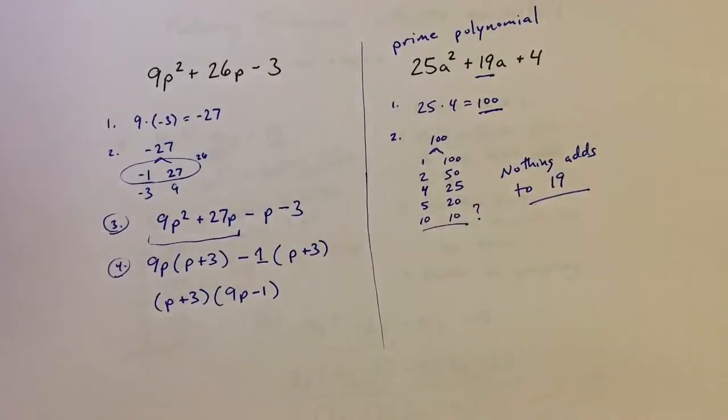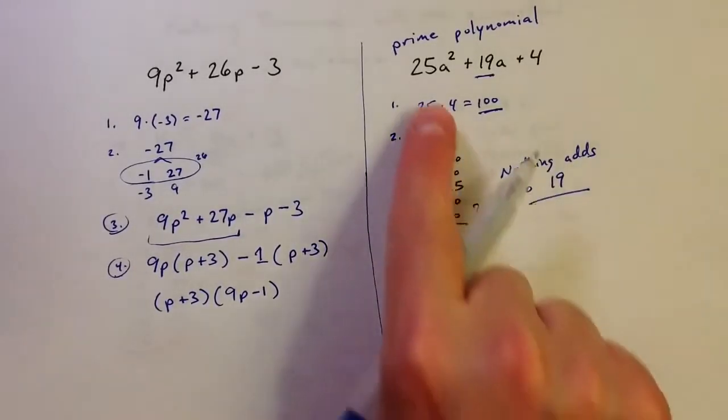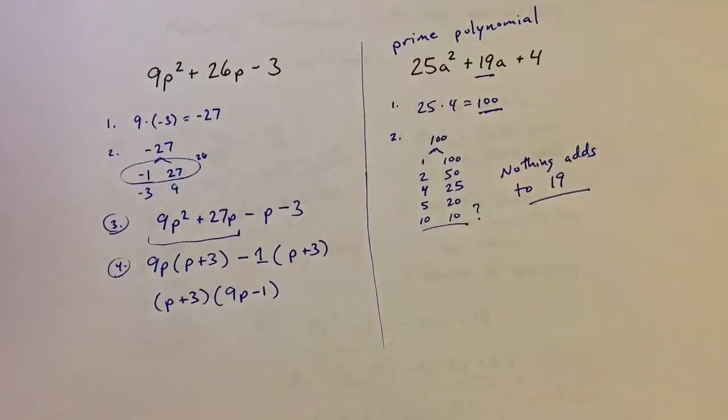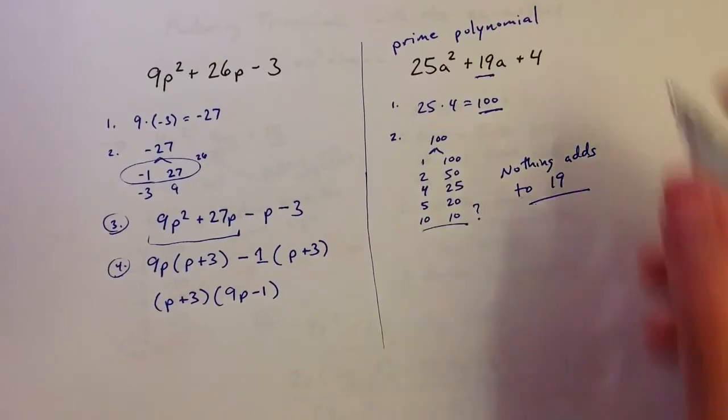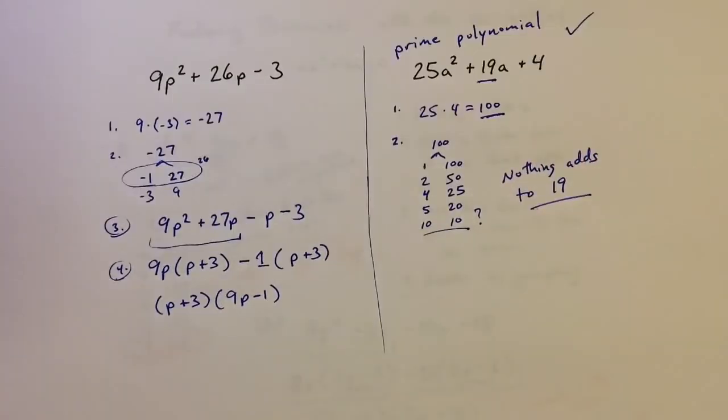So that tells us that there just isn't a factorization. There's no way to factor this particular trinomial. If we had had a 20 instead of a 19, then it would have worked, but 19 is no good. So we end up with a prime polynomial. I hope you enjoyed the video. Thanks for watching.